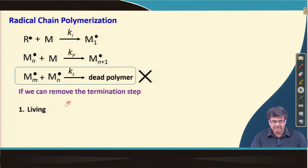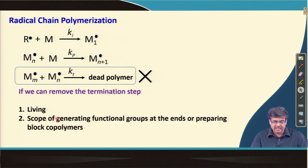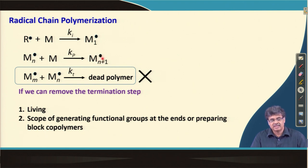As a result, this will remain living, and we can actually end this polymerization when all the monomers are consumed. We can do some reaction on the active radical to generate a functional group, and we can also add a second monomer and restart the polymerization reaction, forming a block copolymer.